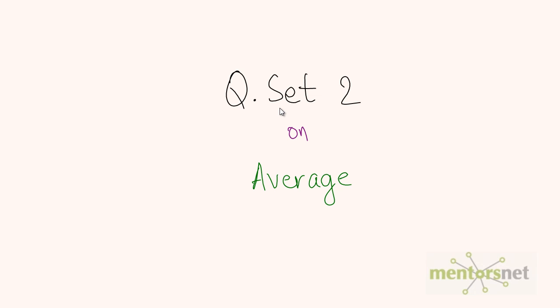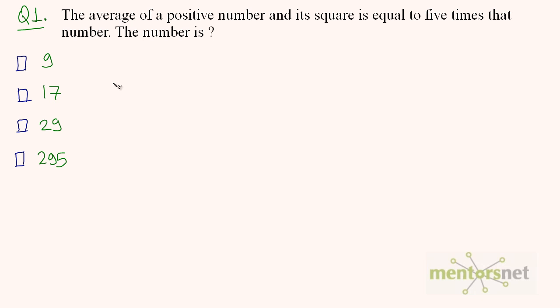Let us do another question set on averages. The average of a positive number and its square is equal to 5 times that number. What is that number?